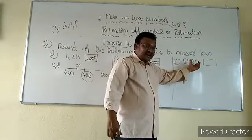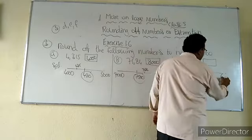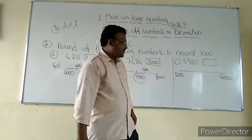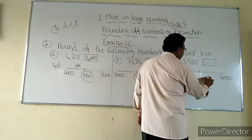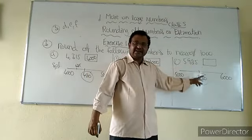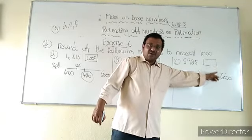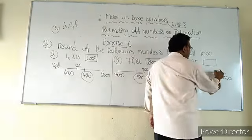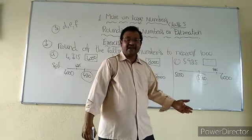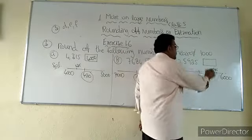Next, 5,925. It is in between 5,000 and 6,000. The halfway is 5,500. Compare: 5,925 is clearly greater than 5,500, so it will be in the more than halfway part. More than halfway means we have to round up the given number to the next 1,000, which is 6,000.